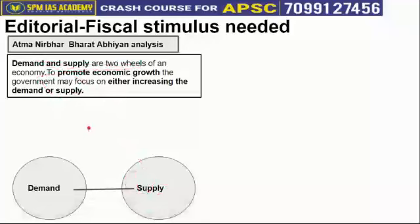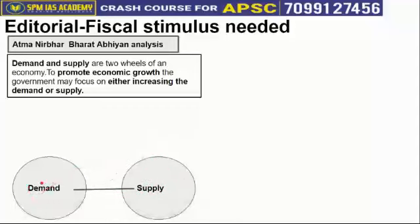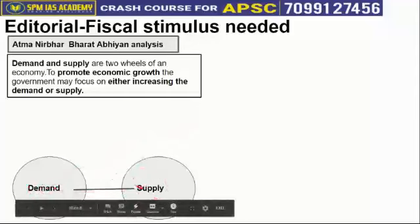Demand and supply are like two wheels of the economy and they move in sync. If we want to increase growth — that is, increase our GDP — we can do two things: we can increase supply by producing more goods and services, which will automatically increase GDP; or we can increase demand by boosting people's consumption, which will naturally pick up production and grow the economy.